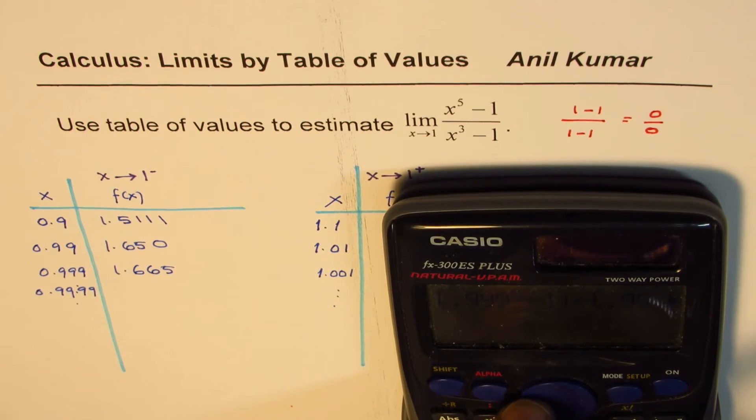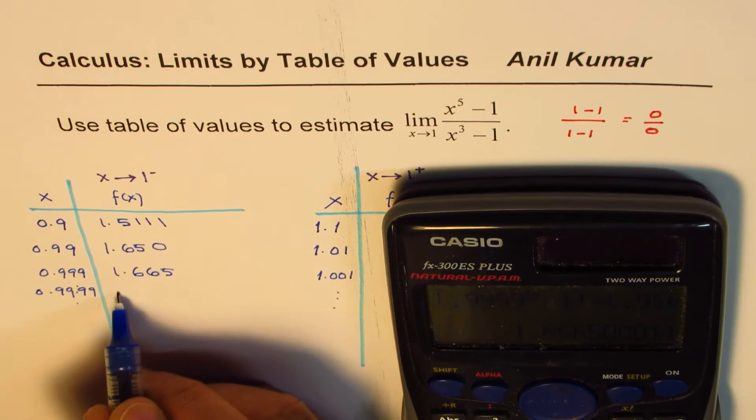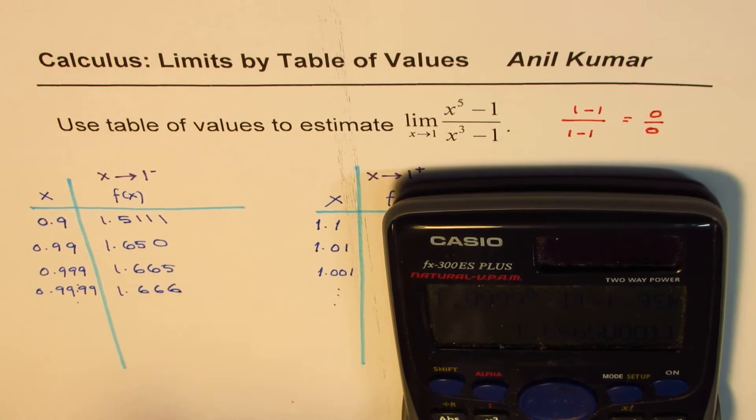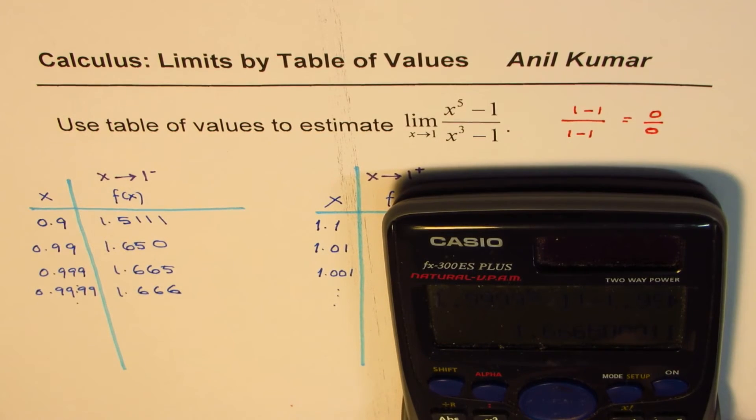What do you find? What value are we approaching? Can you tell me? So it is 1.66 recurring kind of. Do you see that? So that is what we are approaching.